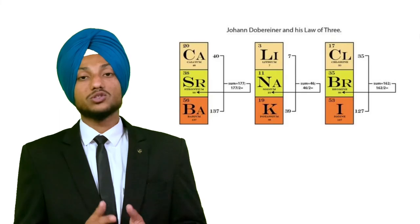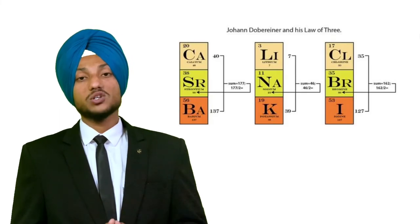There are limitations of Dobereiner's Triads. It failed to arrange all the known elements in the form of triads having similar chemical properties. Dobereiner could identify only three triads from the elements known at that time. So his classification of elements was not very successful. That's the idea about Dobereiner's Triads.